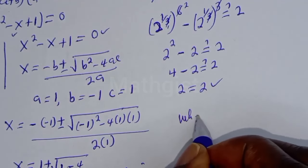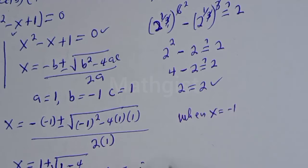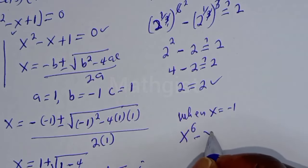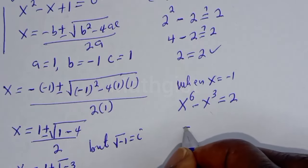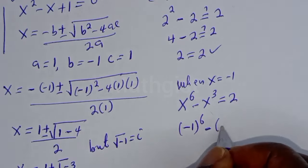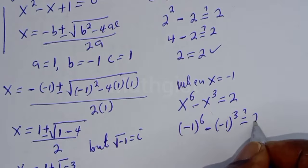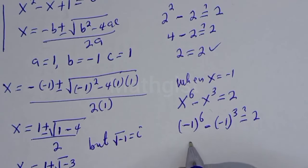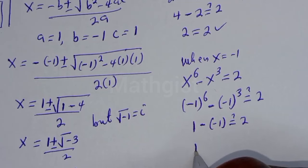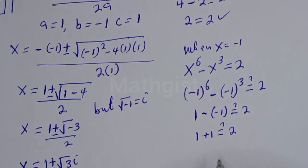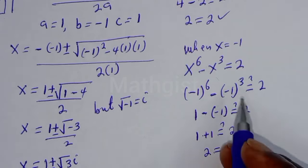Checking s2 equals minus 1: substituting into s^6 minus s^3 equals 2 gives (minus 1)^6 minus (minus 1)^3 must equal 2. (minus 1)^6 equals 1, and (minus 1)^3 equals minus 1, so we have 1 minus (minus 1) equals 1 plus 1 equals 2, which is true. So s equals minus 1 is also confirmed.